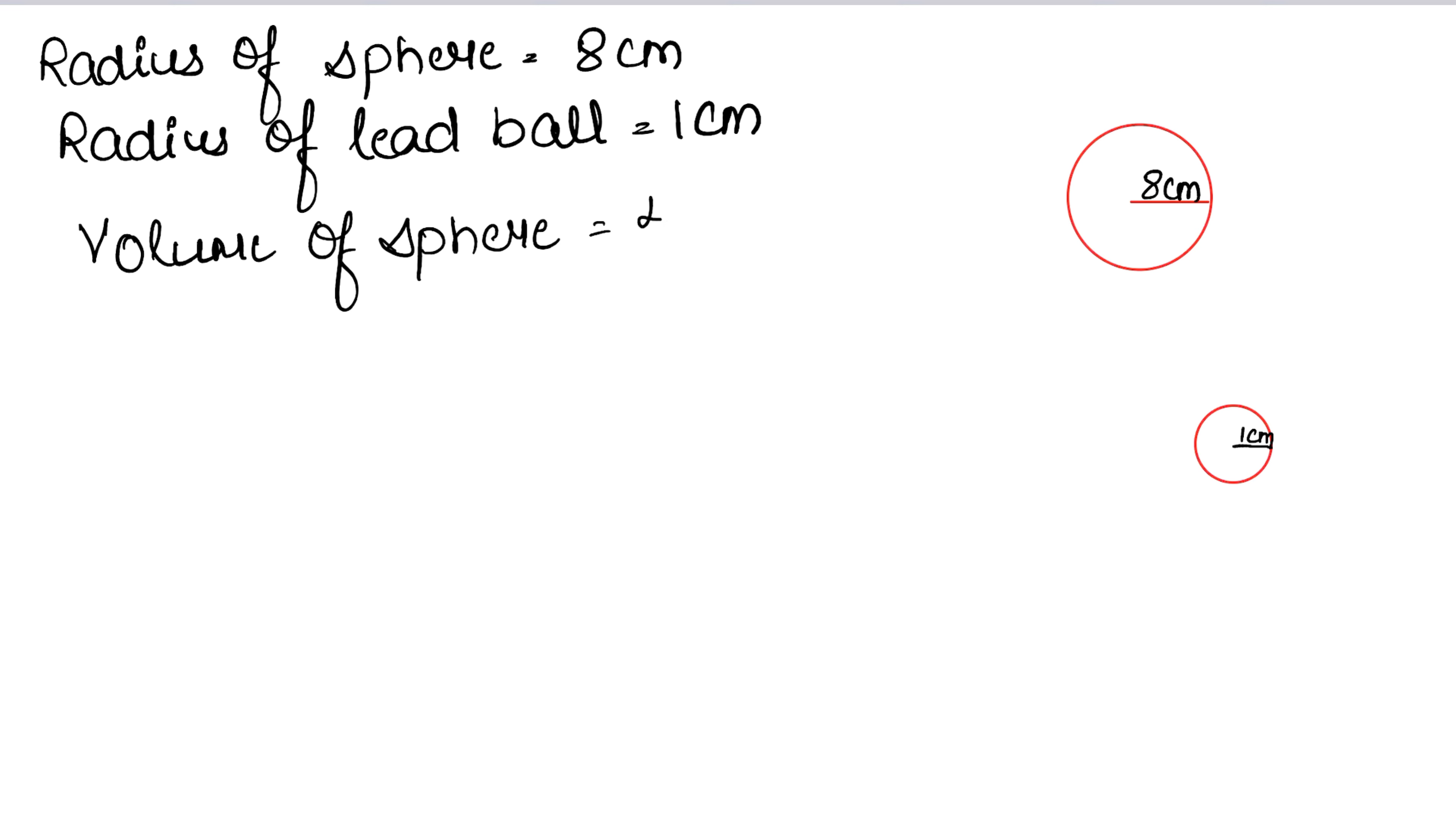Volume of sphere is 4 upon 3 pi r cube. So we get 4 upon 3, pi ki value 22 upon 7, and r is 8 into 8 into 8. 8 ka cube 512 hota hai. Nothing is getting cancelled, so we directly multiply. 22 fours are 88. So 512 into 88 kitna a gya? 8, 2s are 16.